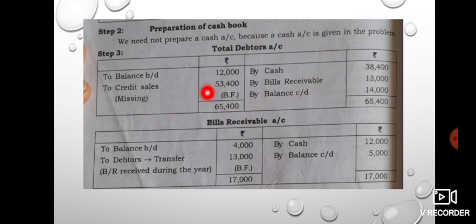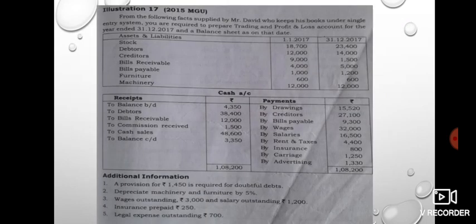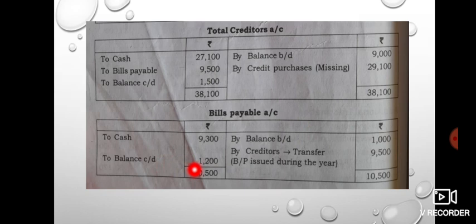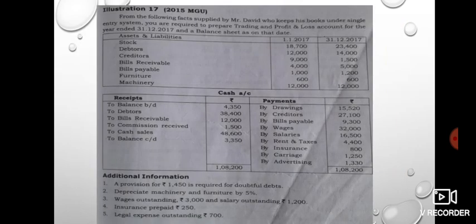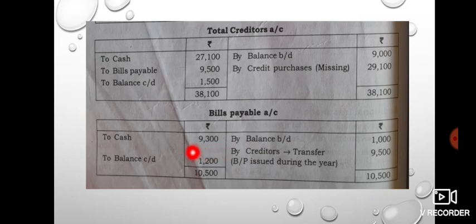Credit sales is the balancing figure of the debtors account. Now, for the total creditors account, the opening balance is 9,000 and the closing balance is 10,000. Cash paid to creditors is 27,000. Then for bills payable: opening balance is 1,000, closing balance is 1,000. Cash paid through bills payable is also included in the cash account.